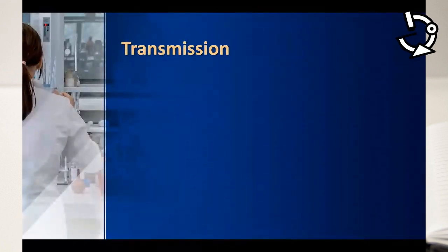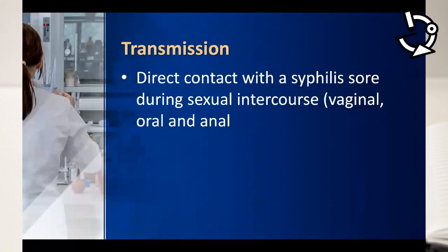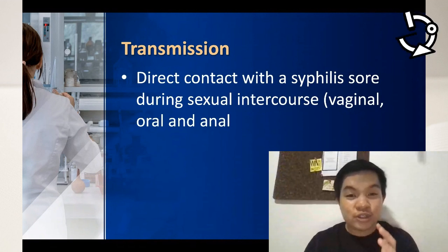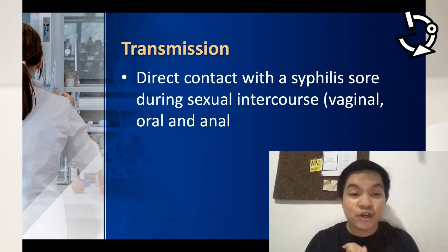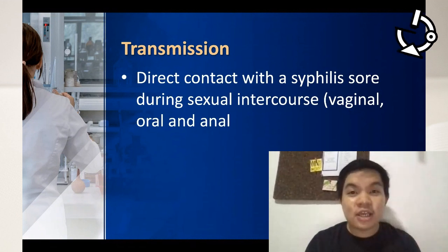Some of you may be asking how these bacteria are transmitted from one person to another. So these are some of the transmission routes for syphilis. It can actually occur by direct contact with the syphilis sore during sexual intercourse — whether those sores are found in the vagina, in the oral cavity, or in the anal area. I will be showing you some pictures of the sores shortly. Those sores are actually tiny lesions whether in the vagina, on the penis, in the oral cavity, or in the anal area, and those are what can transmit the bacteria.